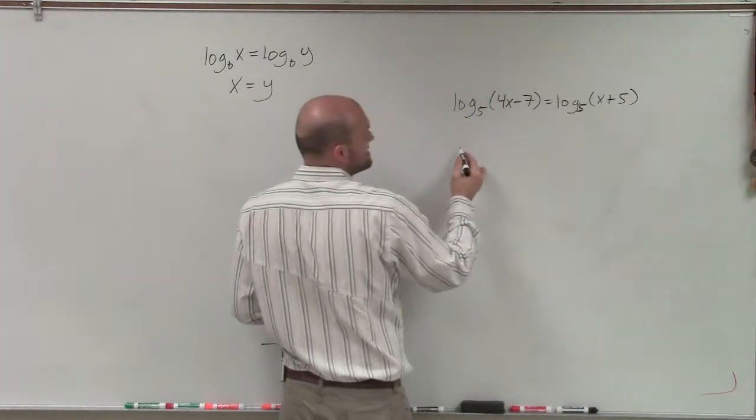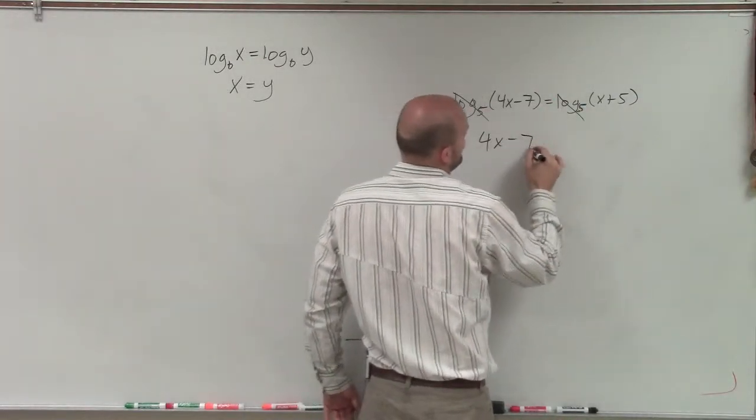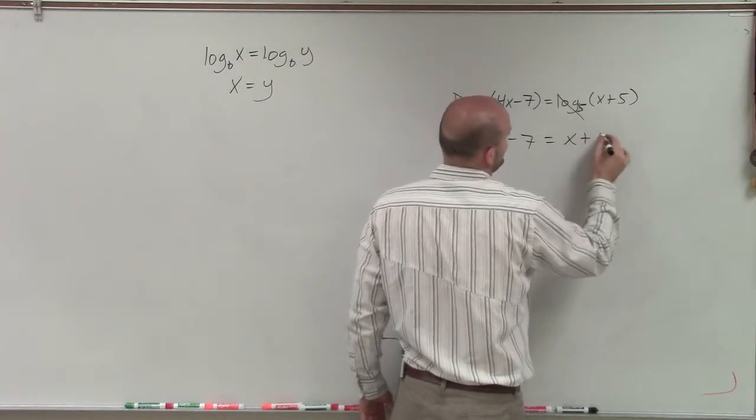Therefore, since I have log base 5 equals log base 5, I know that 4x minus 7 has to equal x plus 5.